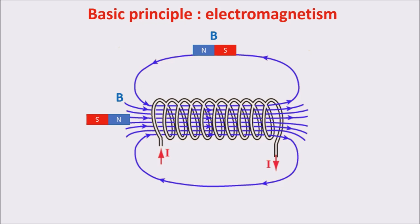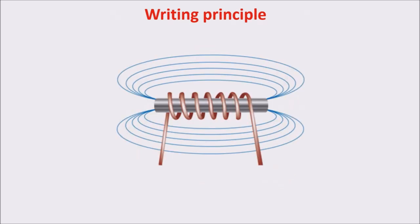We can have two possible current directions and so two possible orientation states, and this is enough to store information in bits. Usually a magnetic core is used to strengthen the magnetic field.